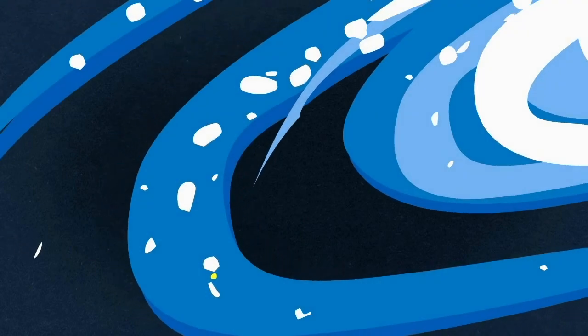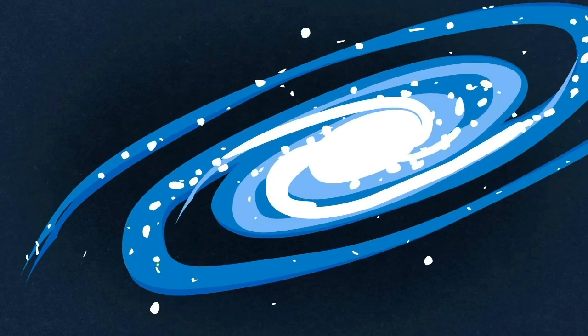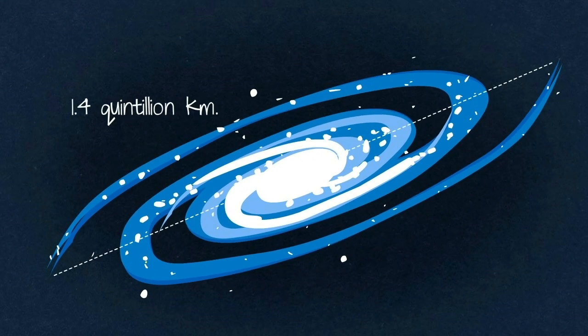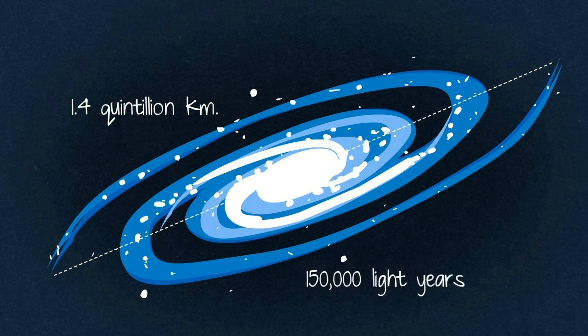The solar system is part of the galaxy we call the Milky Way. Its diameter is 1 quintillion and 419 quadrillion kilometers, about 150,000 light-years.